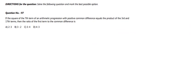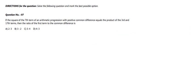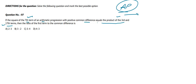Question 97: If the square of the seventh term of an arithmetic progression with positive common difference equals the product of the third and 17th terms, find the ratio of the first term to the common difference.